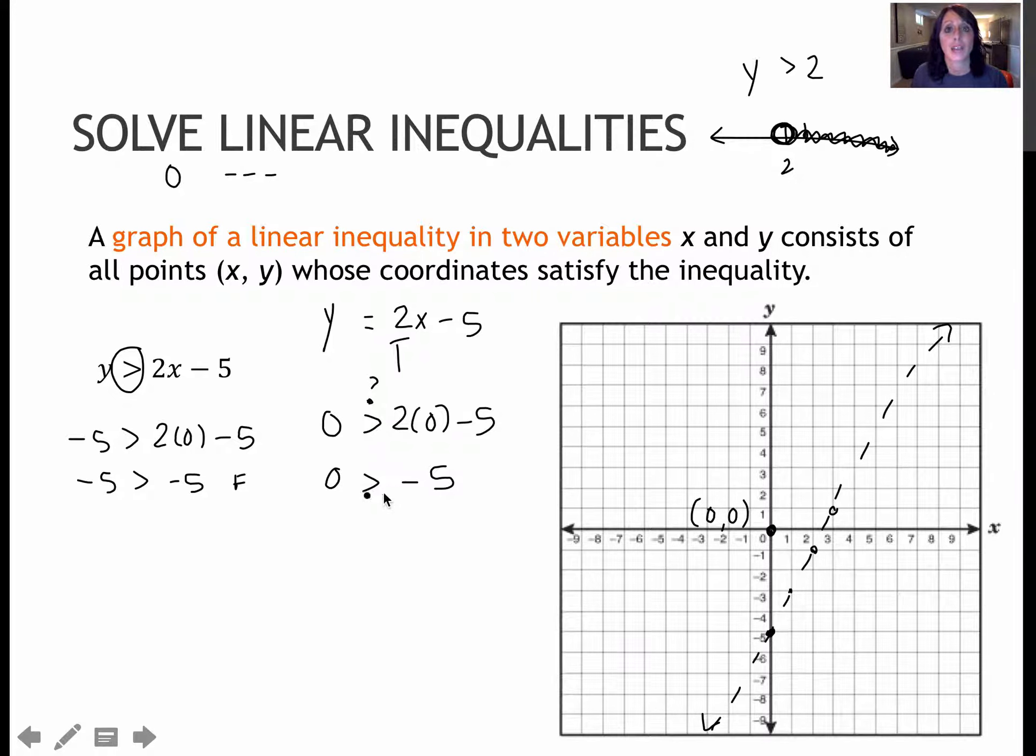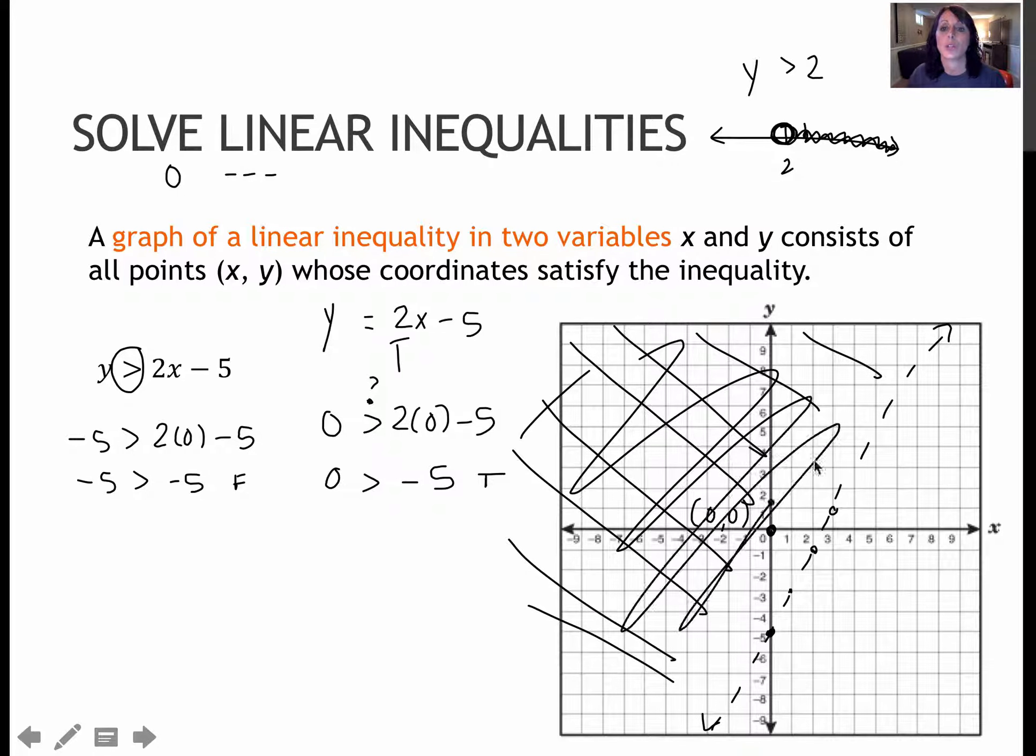Well, 0 is actually greater than negative 5, so that's true. If I choose a test point and my solution is true, that means that everything on this side of the line is a solution. So you would shade whatever's on that side.